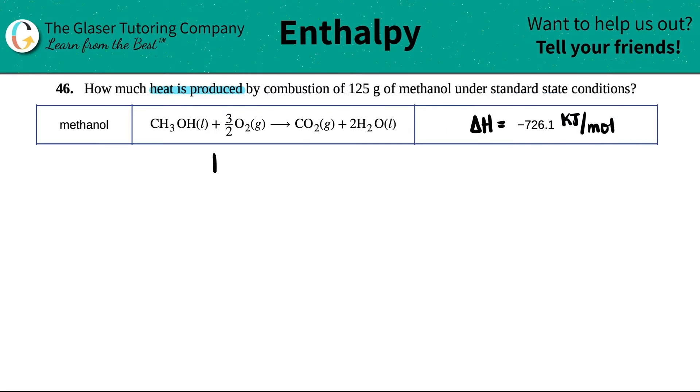I'm going to say for every one mole of methanol, CH3OH, that's going to be combusted, there's going to be 726.1 kilojoules released. And the release is signified by a negative.